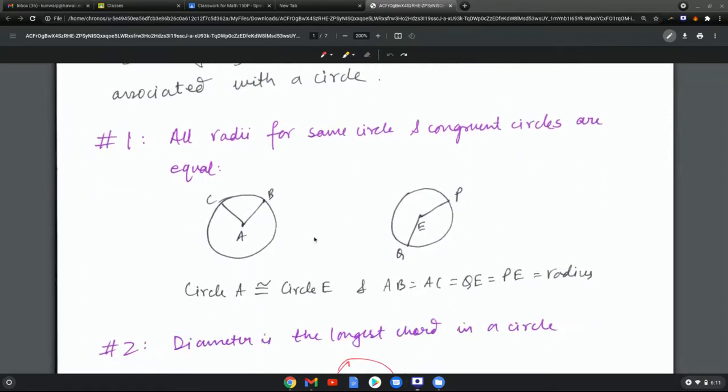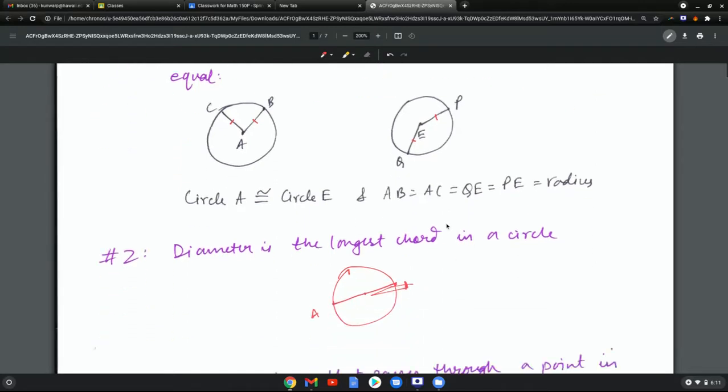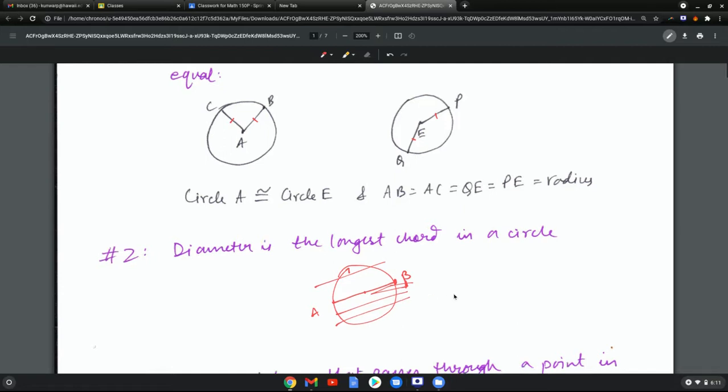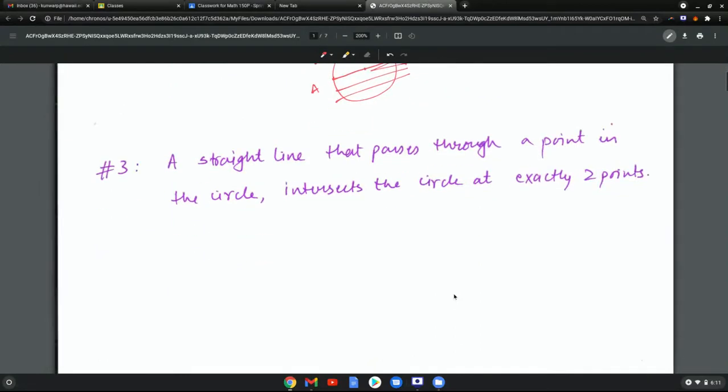All radii of the circle are equal, so these are going to be equal and congruent. The diameter is the largest or the longest chord in a circle, so if this is a diameter, any other line that I draw is going to be necessarily smaller than the diameter. That one's fairly obvious.